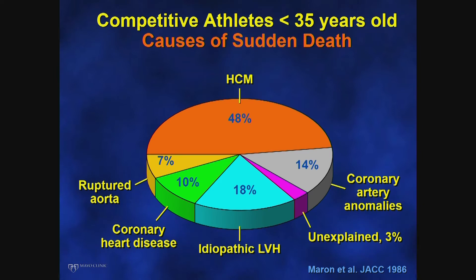Anomalous coronary arteries constitute the second most common cause of sudden death in young athletes, as shown in a paper from Barry Maron more than 20 years ago. If you take young athletes less than 35 years old who die suddenly unrelated to trauma and perform autopsies, the most common anomaly is hypertrophic cardiomyopathy, followed by coronary artery anomalies, among which is ectopic coronary artery origin.